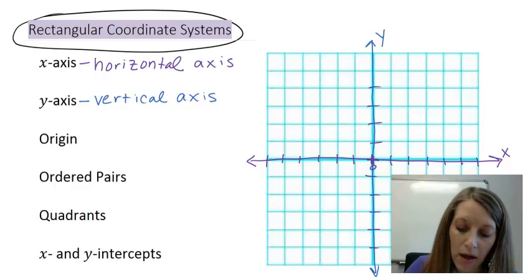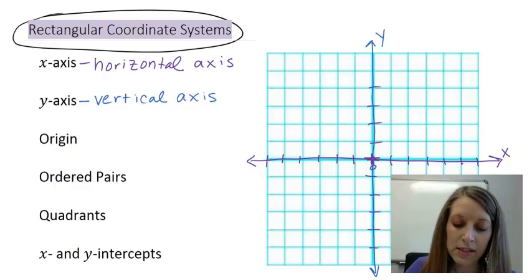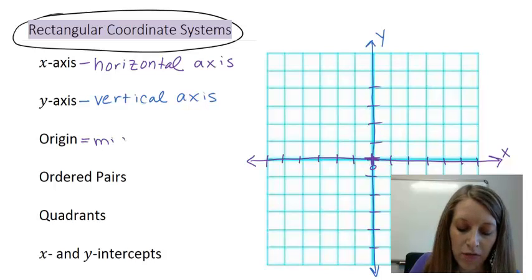Now, in the middle of this here, where your two axes meet, that is what's called the origin. Basically, the middle point of both of those.